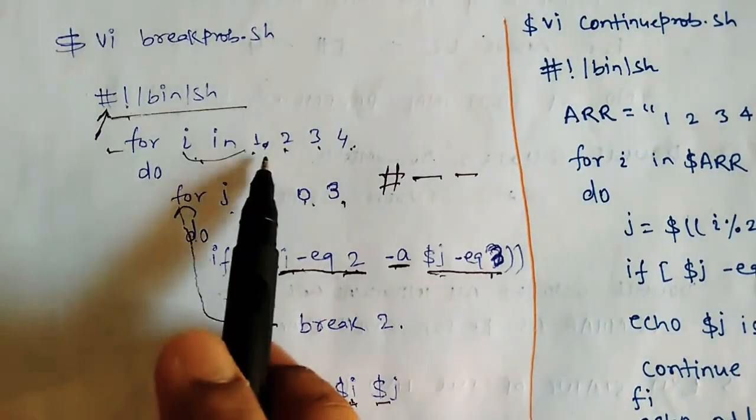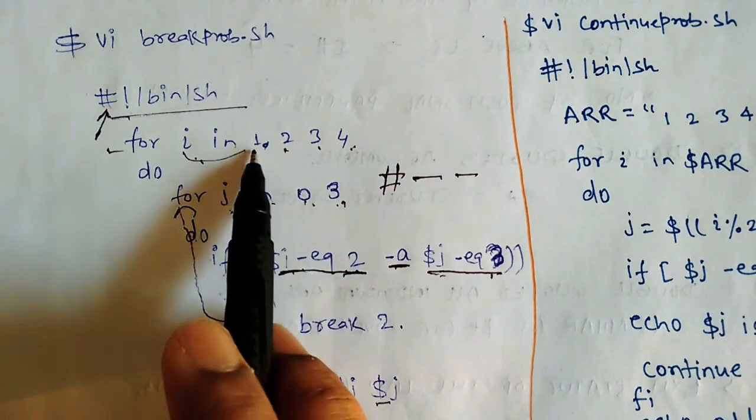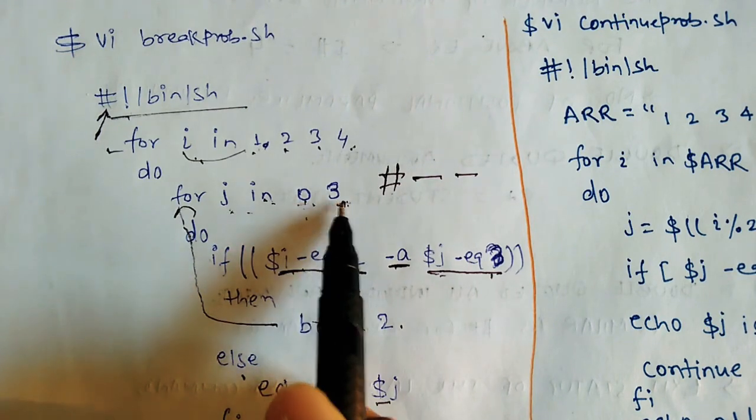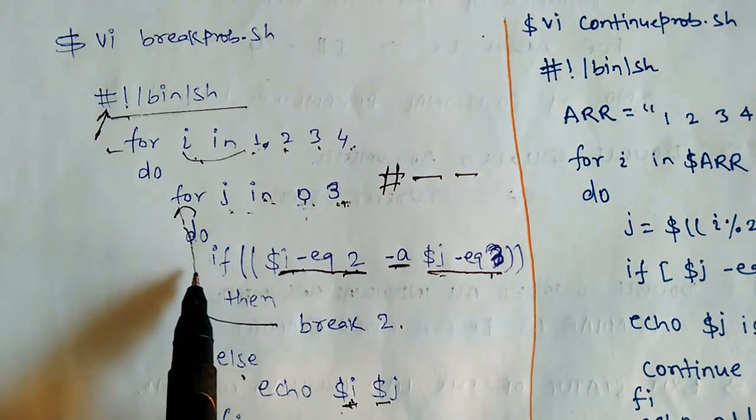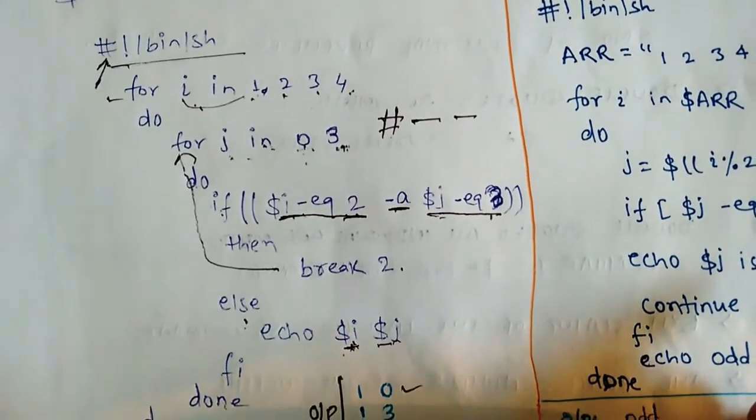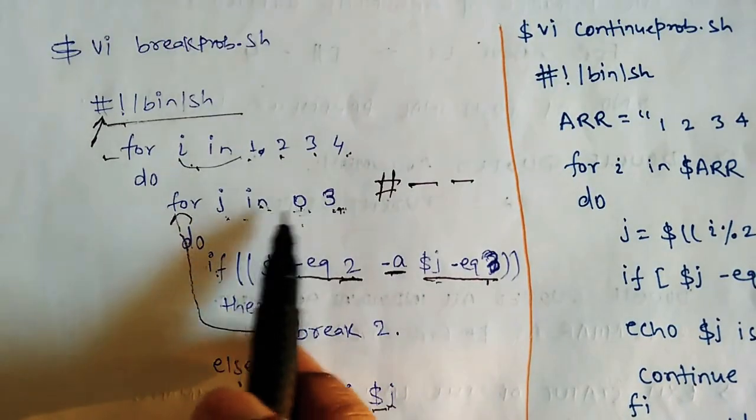So j value is equal to 1. Loop will execute for i value 1 two times, so for 0 it will execute and for 3 it will execute. So once again j is equal to 3 and i is 1, so once again if condition will not satisfy, so else will execute. So 1 and 3 will also display. So here I have written 1 and 3. Once again j value will run two times only.